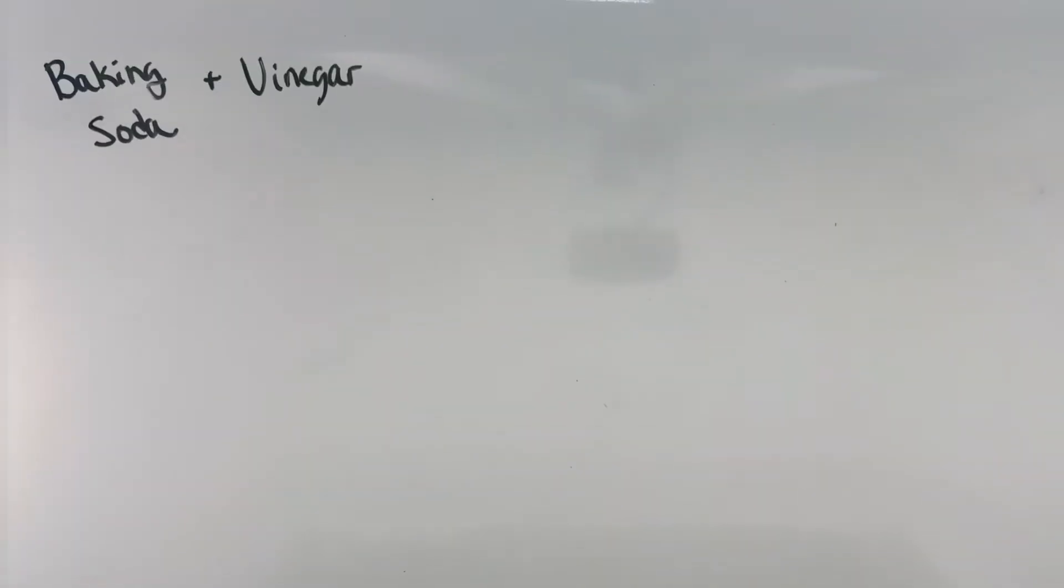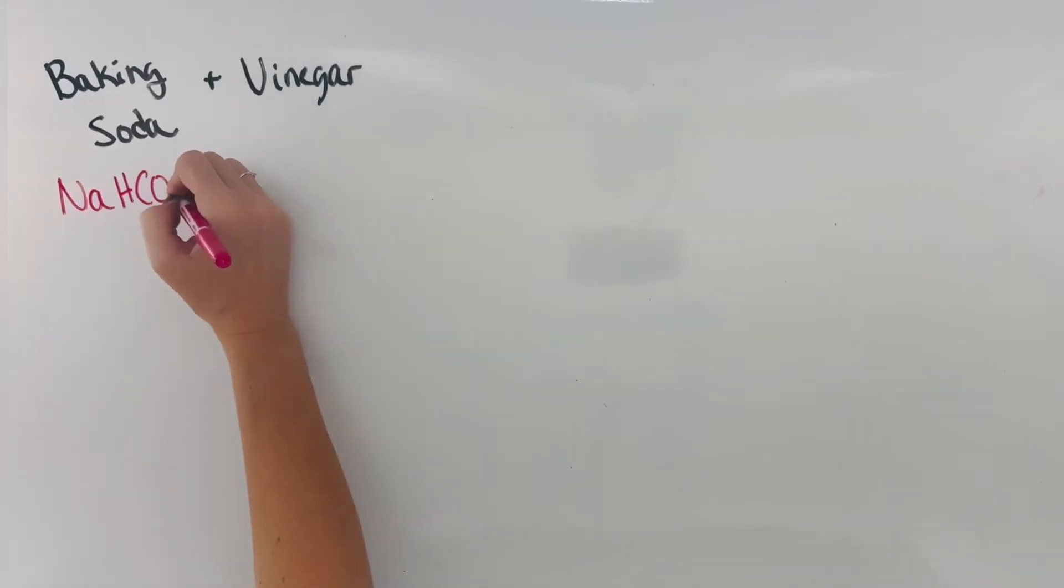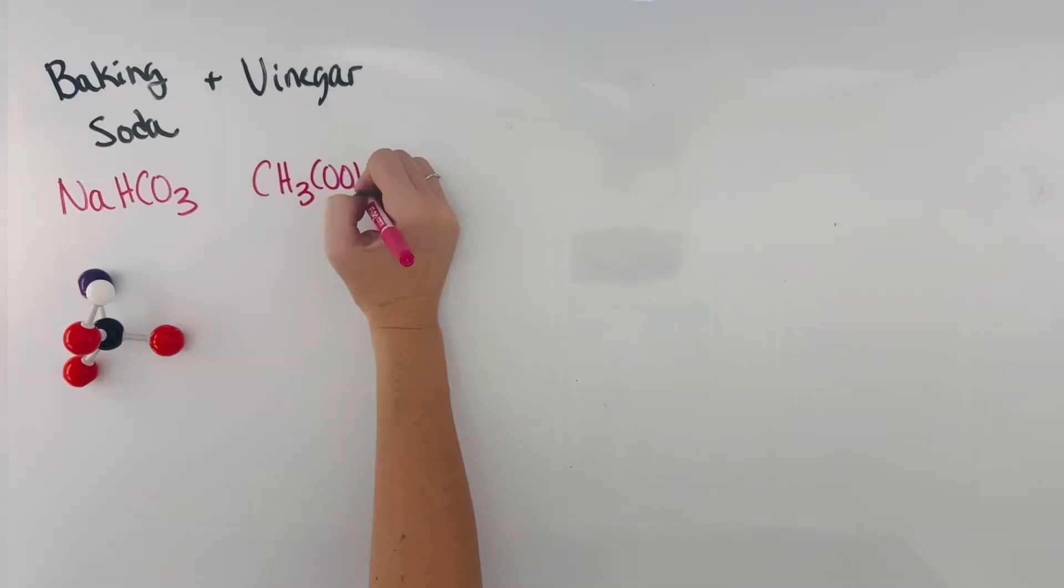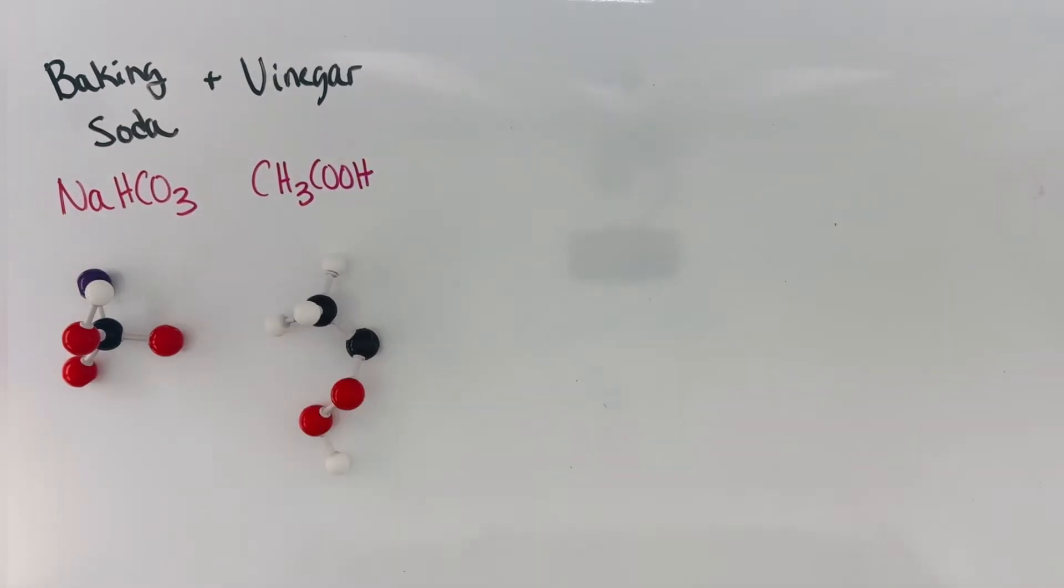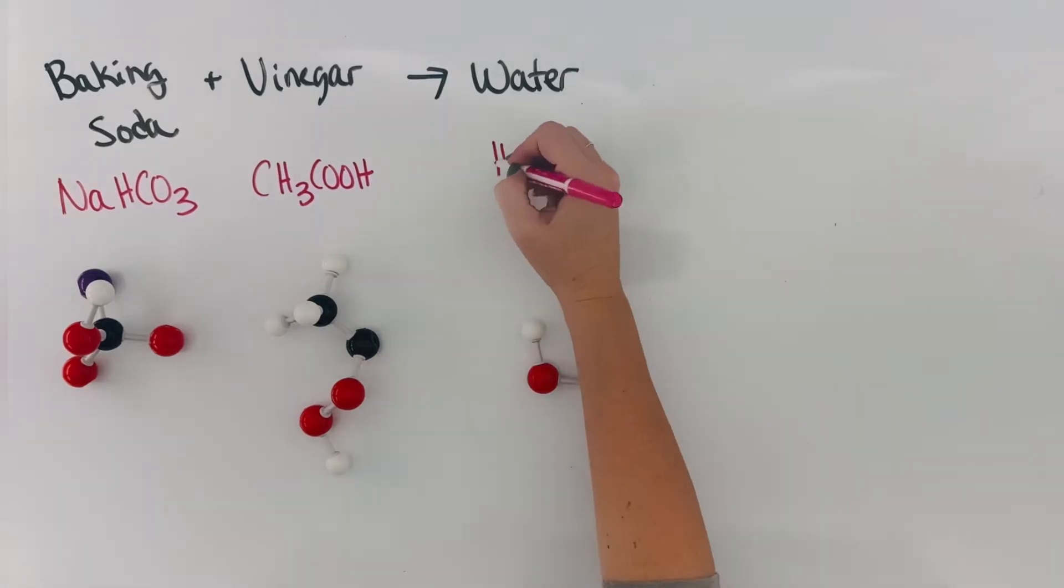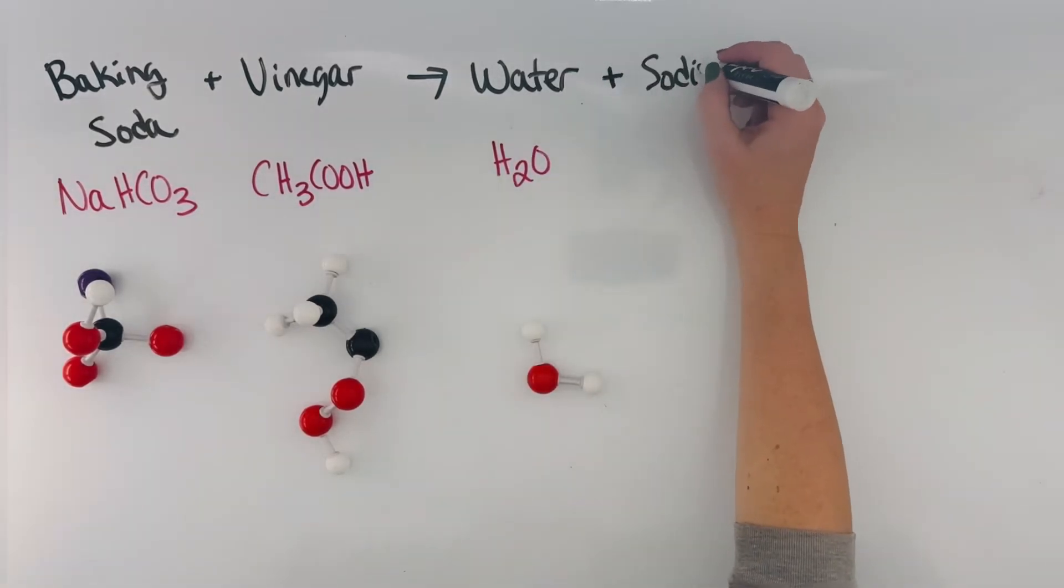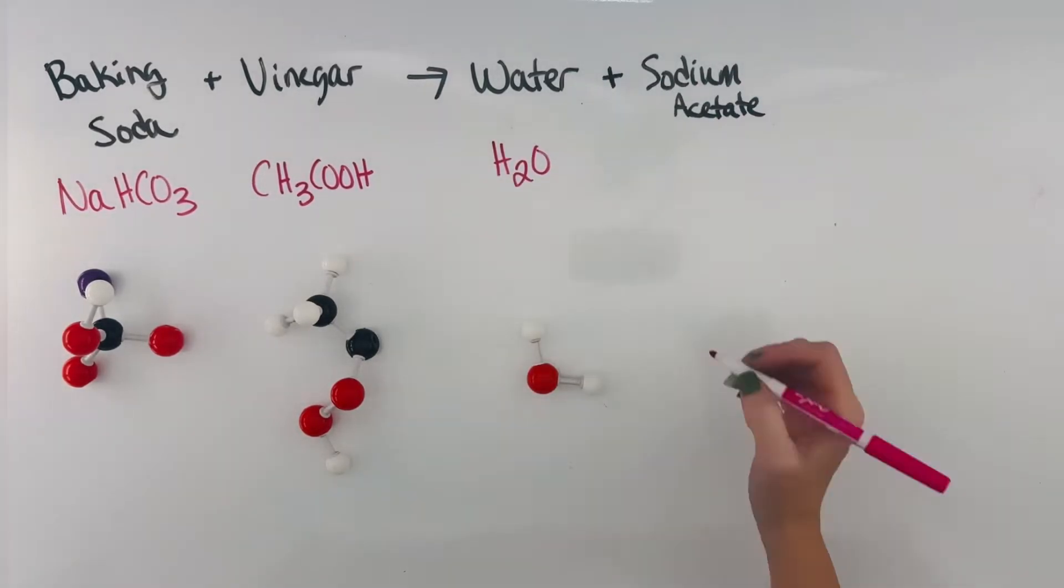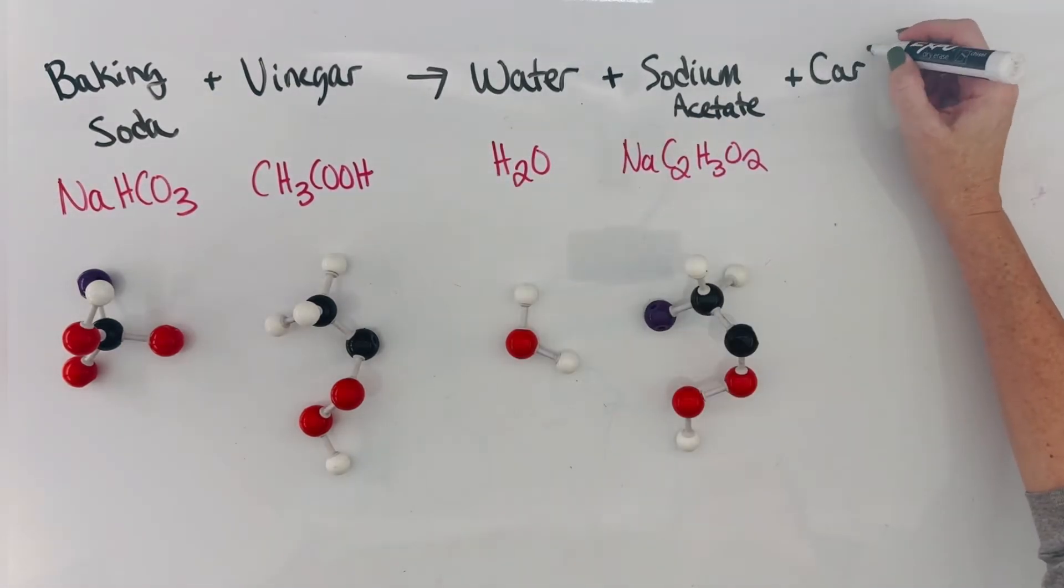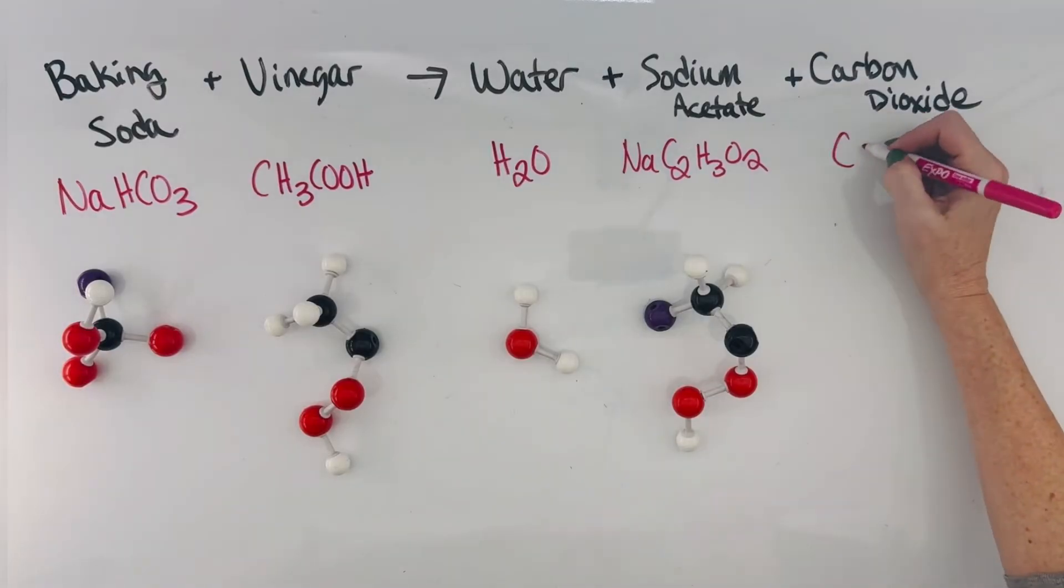So let's go back to our example at the beginning with the baking soda and the vinegar. They're both chemicals with these set molecular formulas that we know exactly what is inside of them. When they react with each other, they form water H2O, sodium acetate NaC2H3O2, and some carbon dioxide CO2.